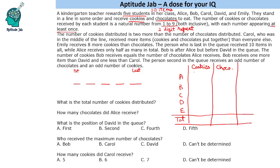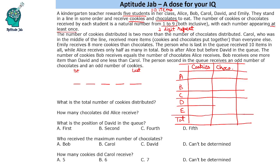We are not given the total number of cookies or chocolates directly, but we can figure that out using the digits given and some additional information. We know digits one to nine all appear, so their sum is 45. The total number of items has to be more than 45.